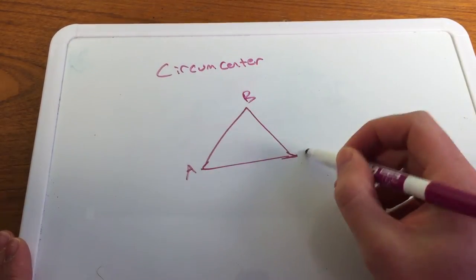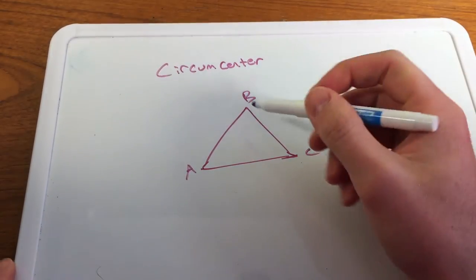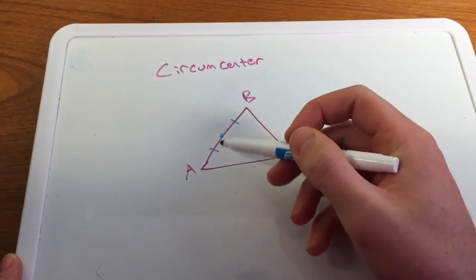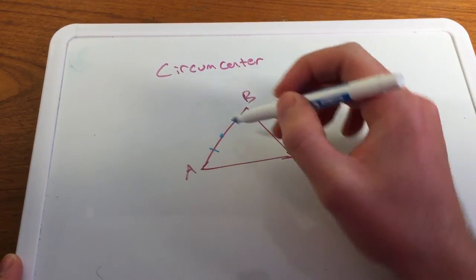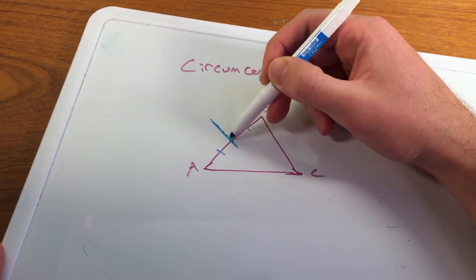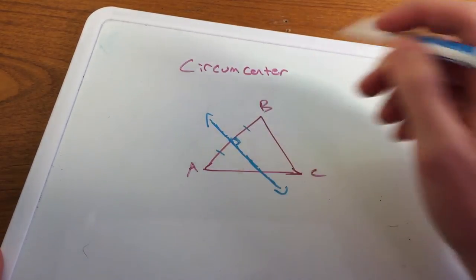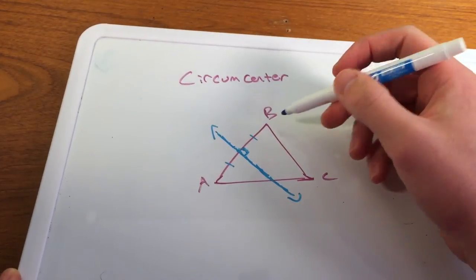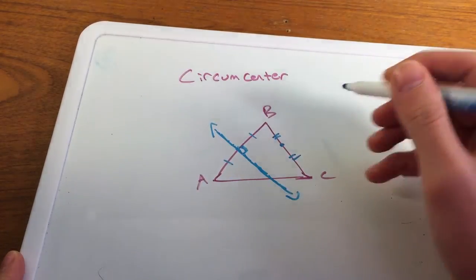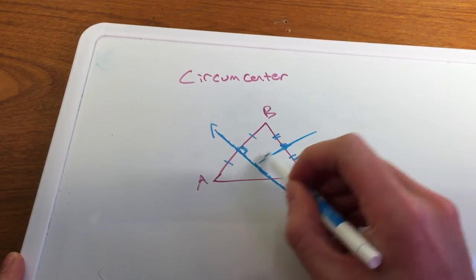We call this triangle ABC. The midpoint of segment AB cuts it into two congruent segments, and we draw a perpendicular line through that midpoint. Then for segment BC, we cut that directly in half — these two segments are congruent — and draw a perpendicular line there.